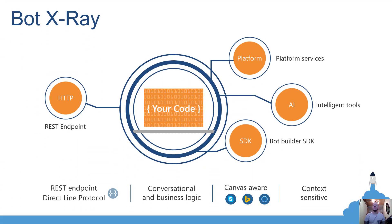An x-ray of a typical bot looks like this: it's just a web app in most cases with a publicly available REST endpoint. It utilizes SDKs — in the Microsoft ecosystem, the Bot Builder SDK. You have intelligent tools called cognitive services. You have platform services to host your bot on, and your bot should be channel-agnostic, able to run in various channels like Skype, Teams, Facebook, Slack, Cortana, utilizing their native integrations.